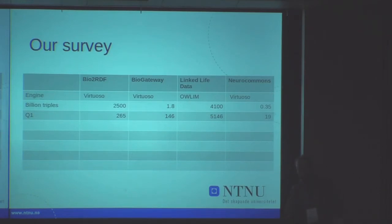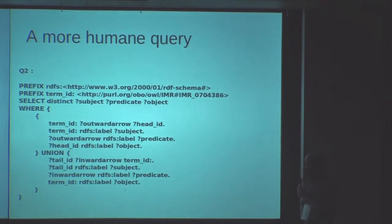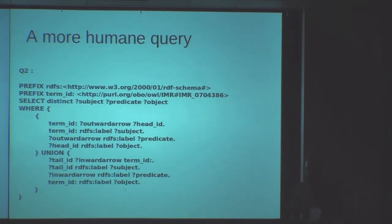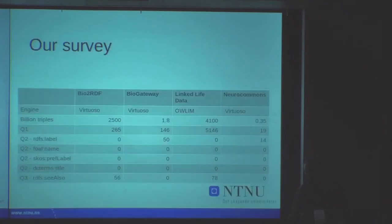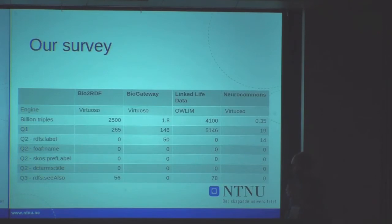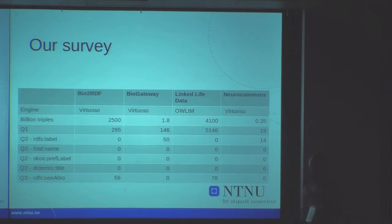This query dutifully returned the expected local environment from all four stores. But the problem with this output is that it looks ugly — it is full of URIs. And URIs are the last thing biologists want to see. So we tried to make it more human-readable. We used this series of queries, a typical query in which we used the predicate RDFS label, and in reality we used all four types of predicate recommended by linked data: RDFS label, foaf:name, skos:prefLabel, and dcterms:type. Only RDFS label returned human-readable results, and only for two resources; the other three returned nothing.